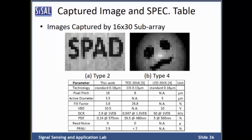This slide shows the captured image and summary table. The image is captured by the type 2 and type 4 pixels in the array, and the summary table summarizes the measurement results.